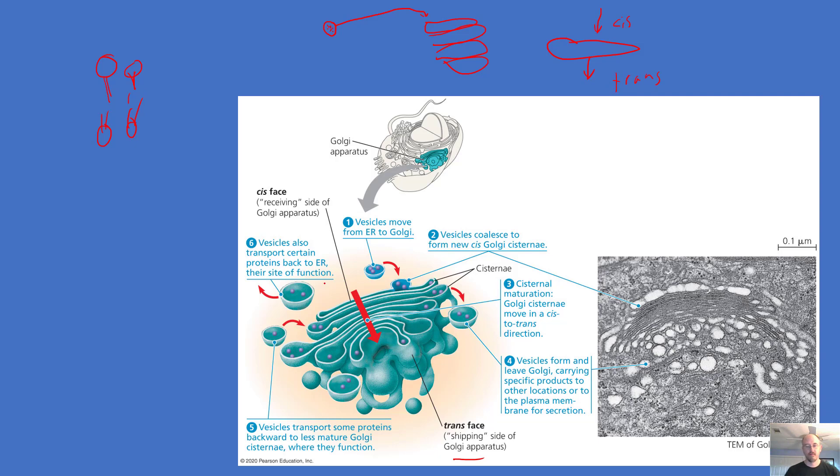The important thing to note here is that transport vesicles are received here and they have things inside of them, proteins or carbohydrates, things like that. And those carbohydrates and proteins and things might be modified as they proceed through the Golgi apparatus.